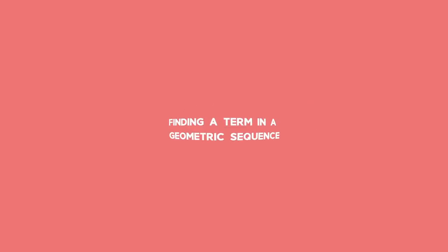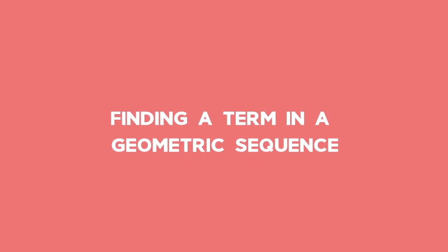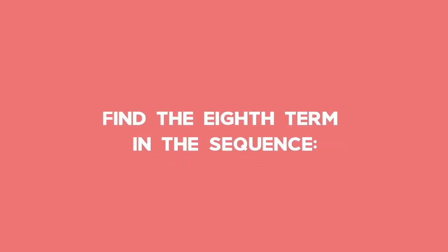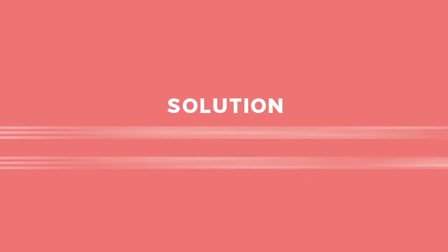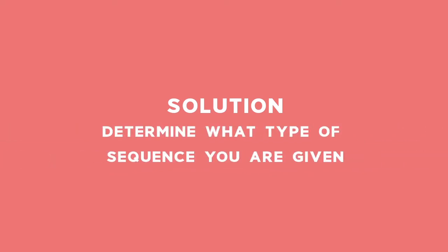Example 1: Finding a term in a geometric sequence. Find the 8th term in the sequence 32, 16, 8, and so on. Solution: Determine what type of sequence you are given.